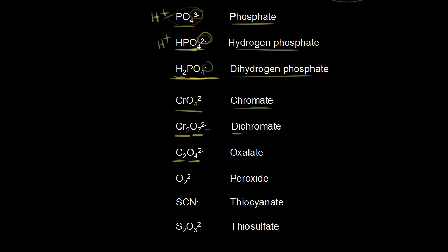Next, C2O4 2 minus is called the oxalate ion, and we have O2 2 minus is called peroxide, and here we have SCN minus, which we call thiocyanate. So thio, think about sulfur if you see thio there. So for our next one, we have sulfur present again. It's S2O3 2 minus, and this one's called thiosulfate.